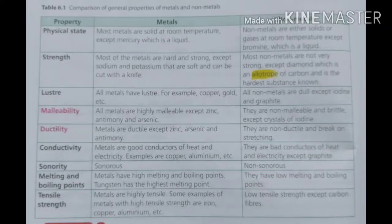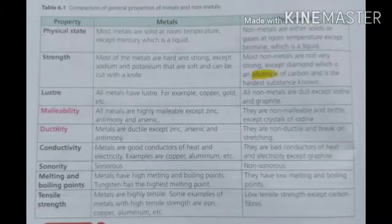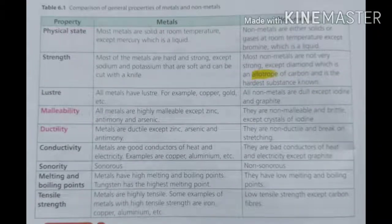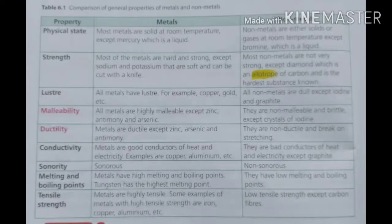Comparing strength, metals are very hard and strong. Exceptions are sodium and potassium, which are soft. Non-metals are not very hard or strong, except diamond, which is an allotrope of carbon. An allotrope refers to the different physical forms in which an element can exist.